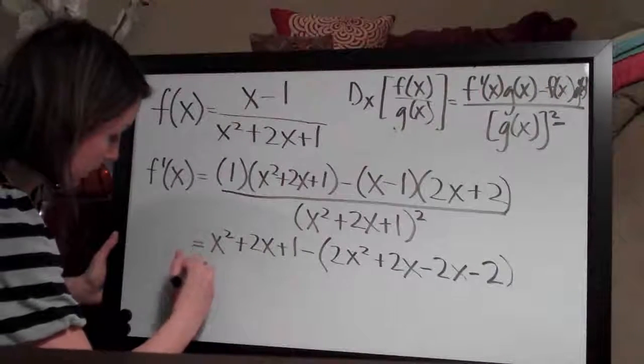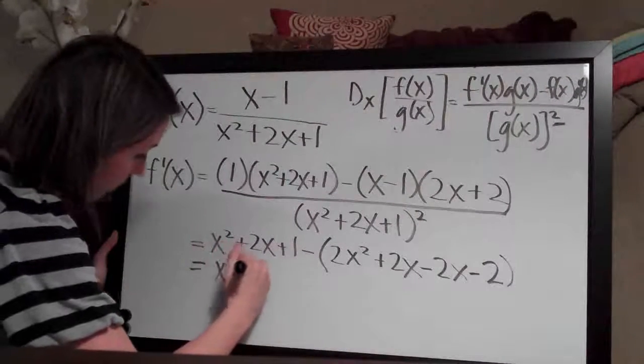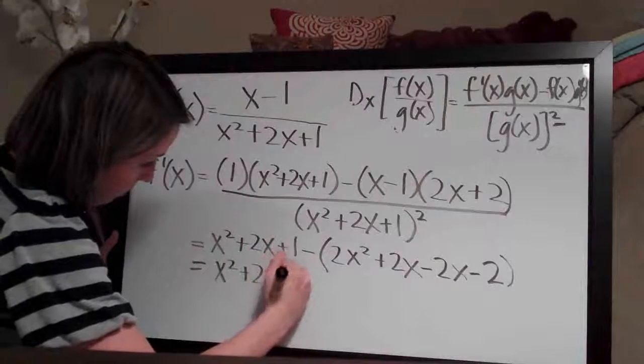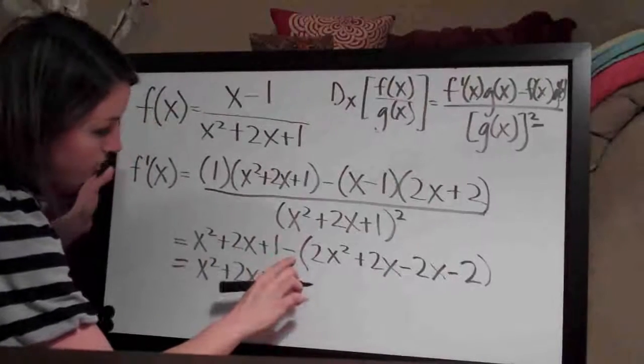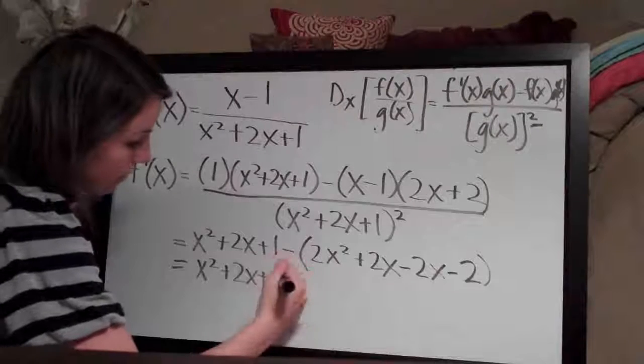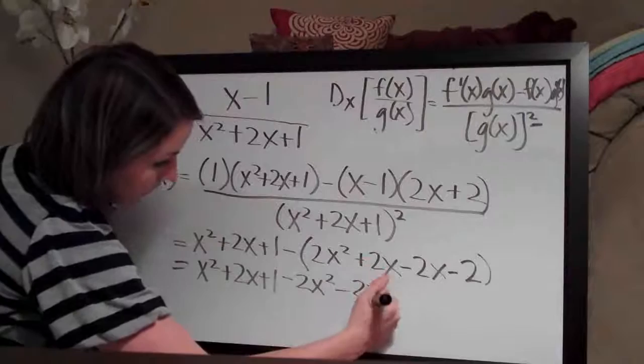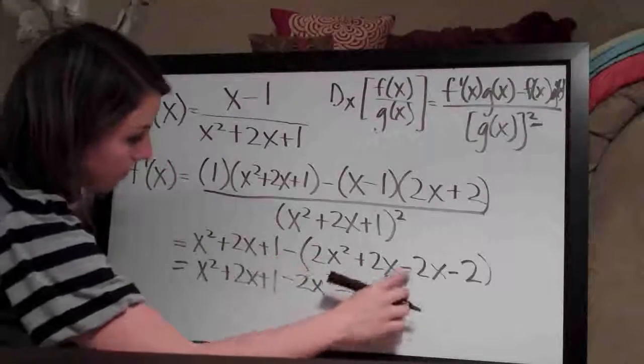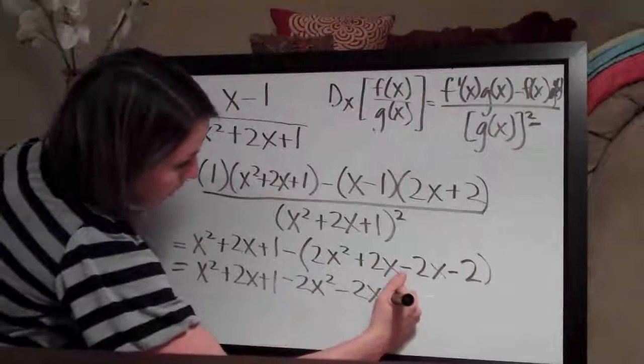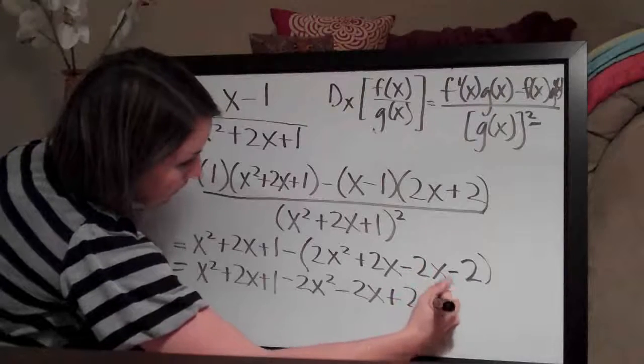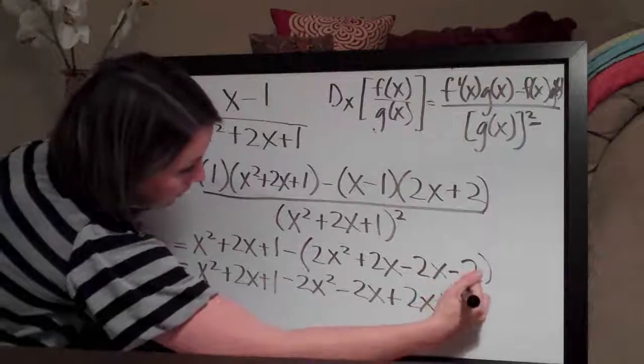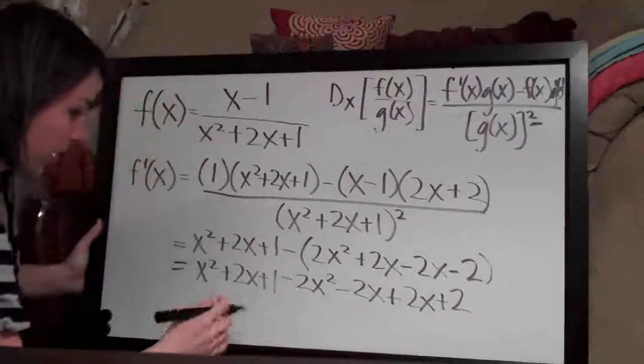So that's going to look like x²+2x+1, and I'm going to distribute the negative sign here. So we'll have -2x²-2x, and we've got a negative times a negative, so that's +2x and then +2.